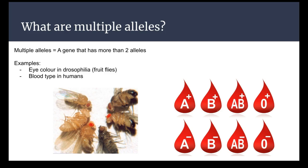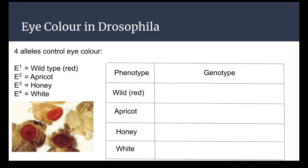We're going to go through the eye color for fruit flies, or Drosophila, first. There are four different alleles that control eye color. I use E1, E2, E3, and E4, because wild type, which is red, is the most dominant of the four, and white is the least dominant. So 1 is the most dominant, then 2, then 3, then 4. If a fly has red eyes, there are actually a whole bunch of different options for their genotype — as long as they have one E1, they have red eyes because it's the most dominant.